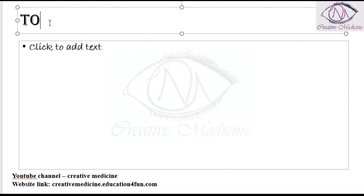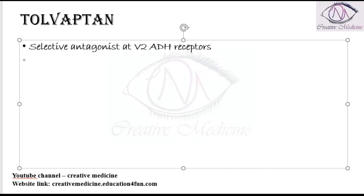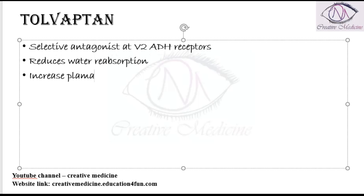Tolvaptan is a selective antagonist at V2 ADH receptors. V2 ADH receptors are responsible for aquaporin production. Because of antagonizing or blocking the V2 ADH receptors, aquaporin production is lost, and thus it will reduce water reabsorption. This will also increase the plasma sodium concentration.